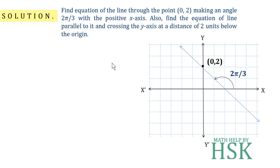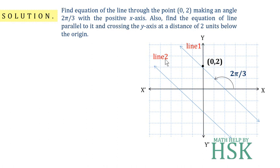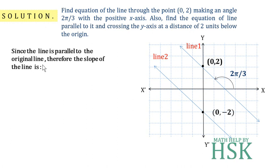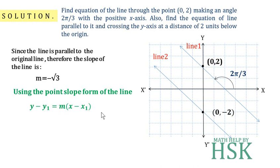We call the first line Line 1 and the required parallel line Line 2. Line 2 crosses the y-axis at (0, −2). Since Line 2 is parallel to Line 1, its slope is also equal to −√3. Using the point-slope form, y − y₁ = m(x − x₁), with (x₁, y₁) = (0, −2) and m = −√3.